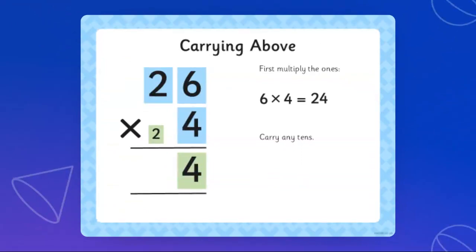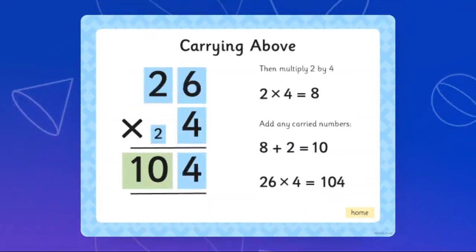Now again let's repeat. 6 times 4 is 24. We always multiply the ones. We always start when multiplying, we multiply the ones, then we multiply the tens. So 6 times 4 is 24. Then we carry above. As you can notice, the next number which 2 is above.